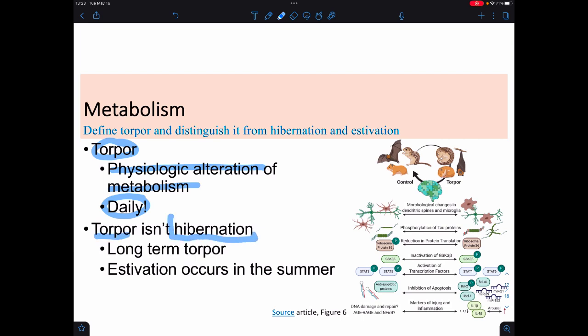Torpor should also be not confused with hibernation. Hibernation is a long-term torpor, usually attempting to avoid some type of situation like extreme periods of hot or cold. If it turns out to be to avoid the heat, like if it occurs during the summer, it's called estivation. We don't call it hibernation.